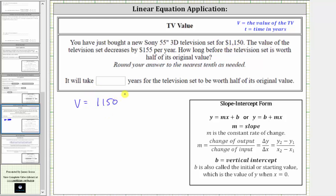And then because it decreases by $155 per year, we would have minus 155 times T. So the value of V is equal to the starting purchase price minus $155 times the number of years.